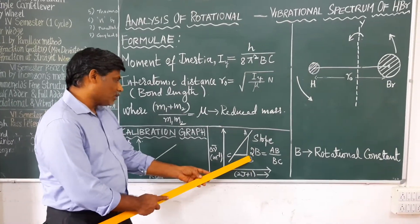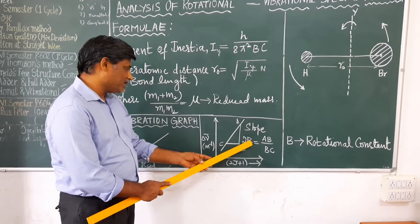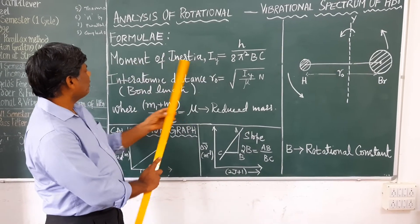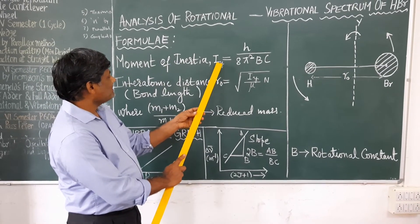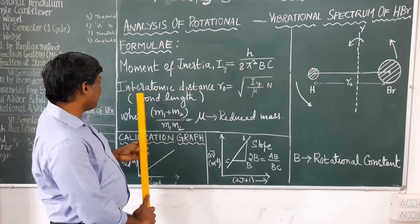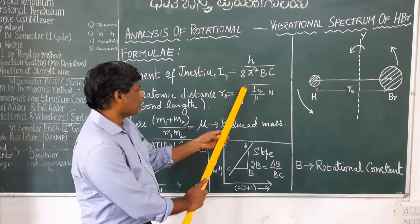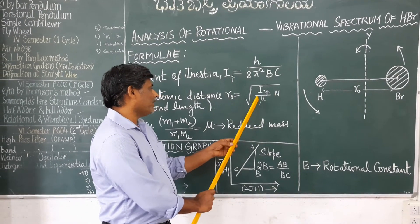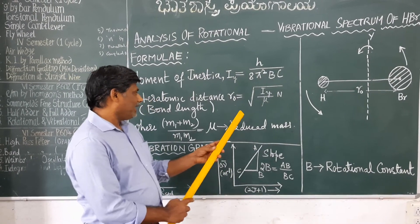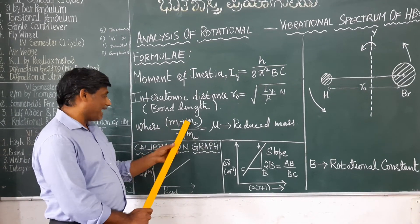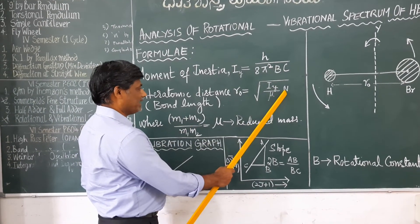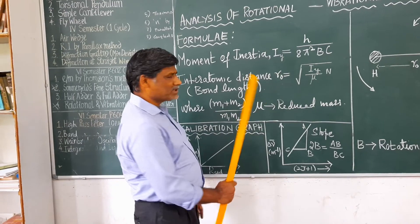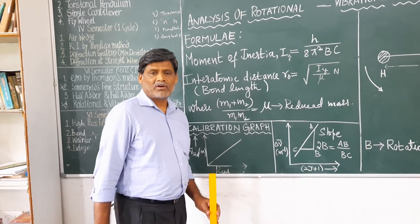From the second graph, we find the slope, which gives us 2B, and from that we obtain the value of B. We use this B to calculate the moment of inertia of the molecule about the y-axis, and then use the moment of inertia to calculate the bond length using the formula I_y = mu * r², where mu is the reduced mass in amu. The bond length comes out to be around 1.4 angstroms.